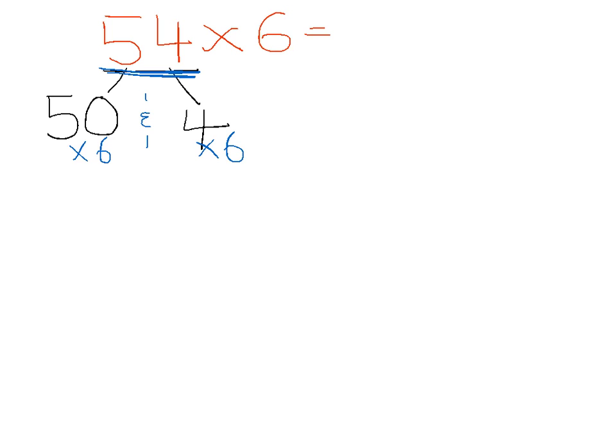And we know that 50 times 6 is 300, and 4 times 6 is 24. So 54 times 6 is the same as 300 plus 24, which is 324.